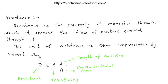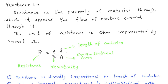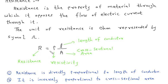The formula for resistance is R equals rho L by A, where R is the resistance, rho is the resistivity, L is the length of material, and A is the cross sectional area of conductor.